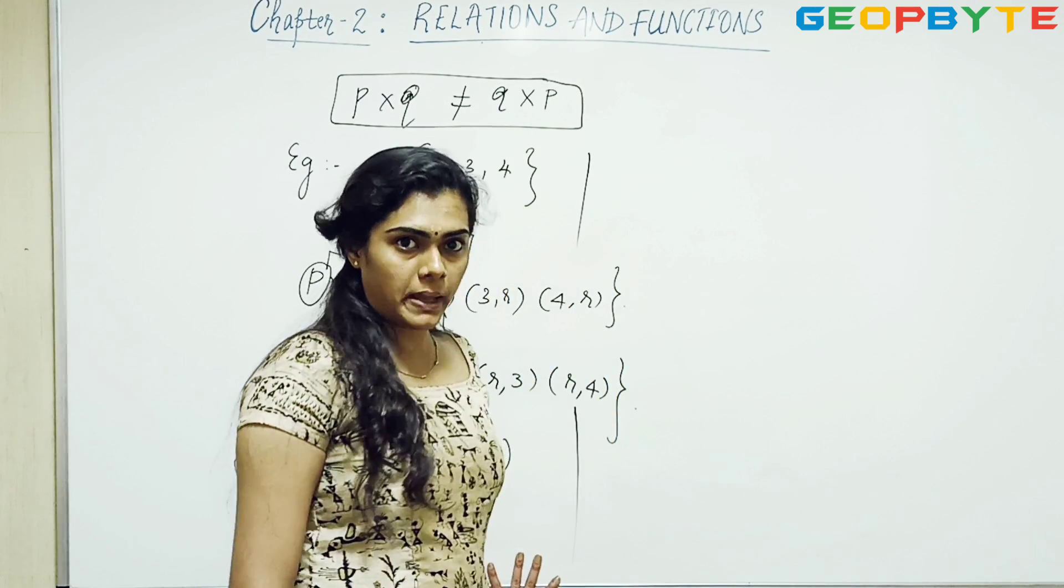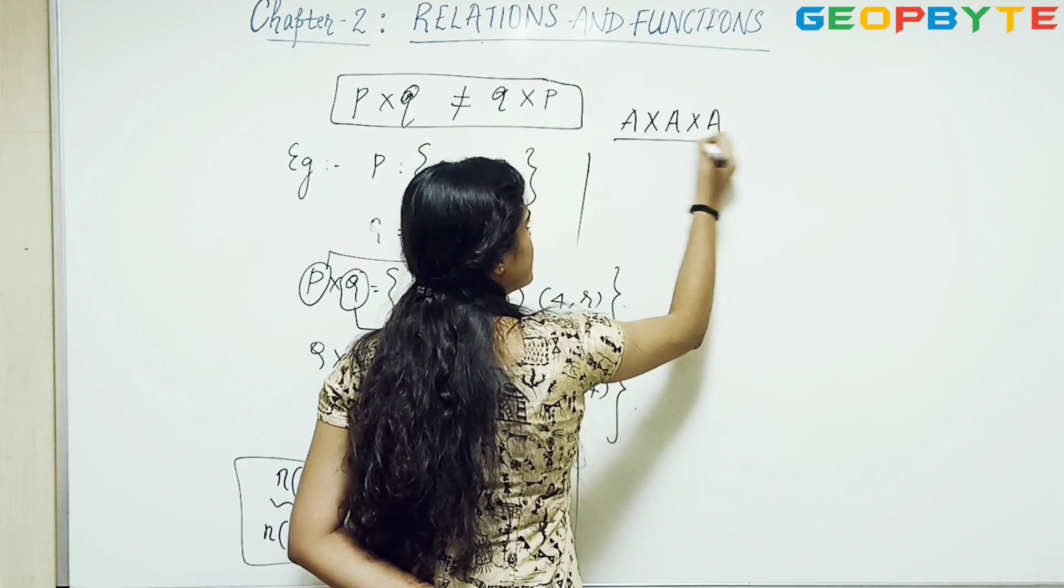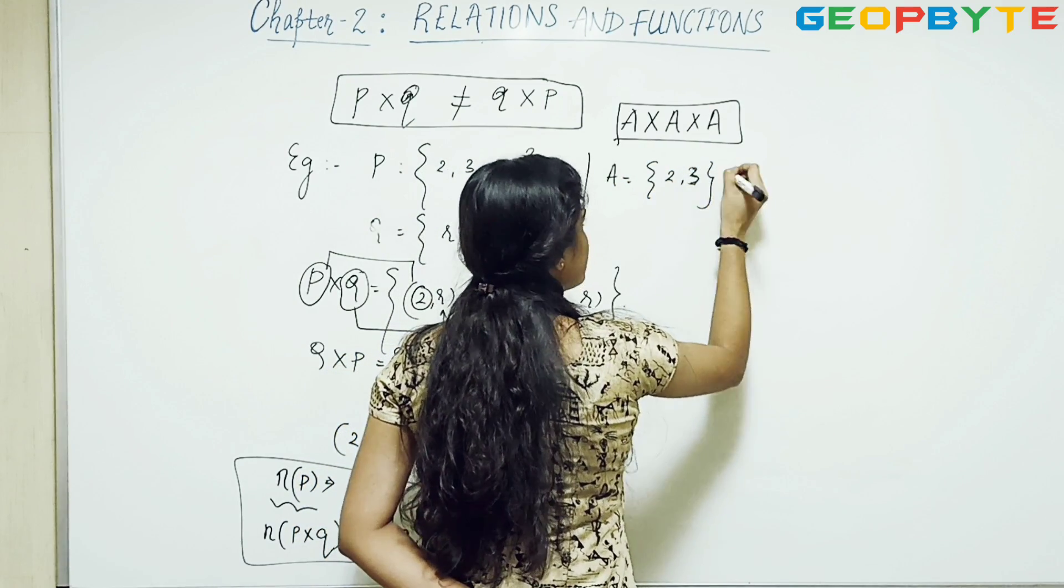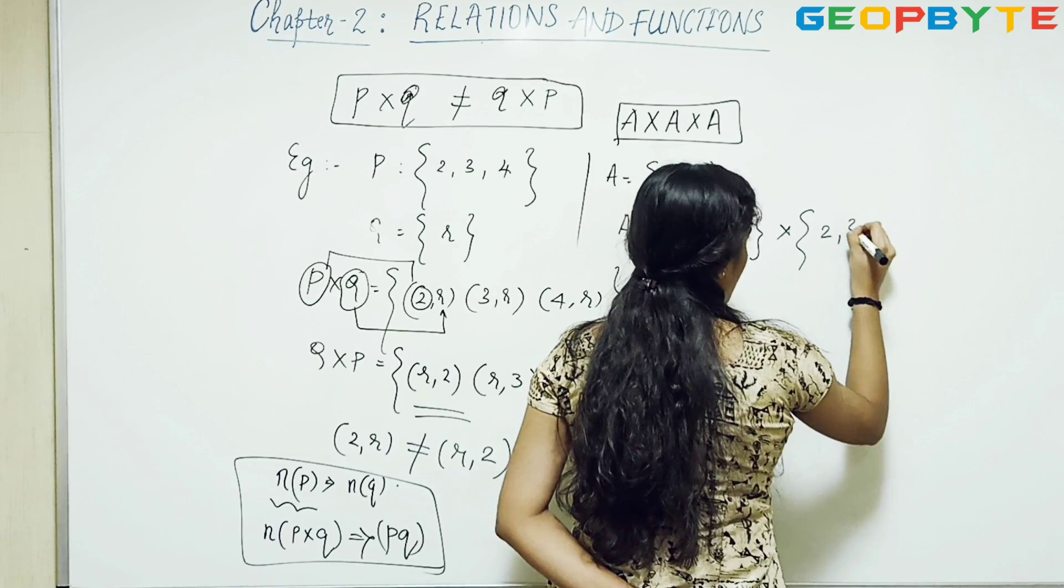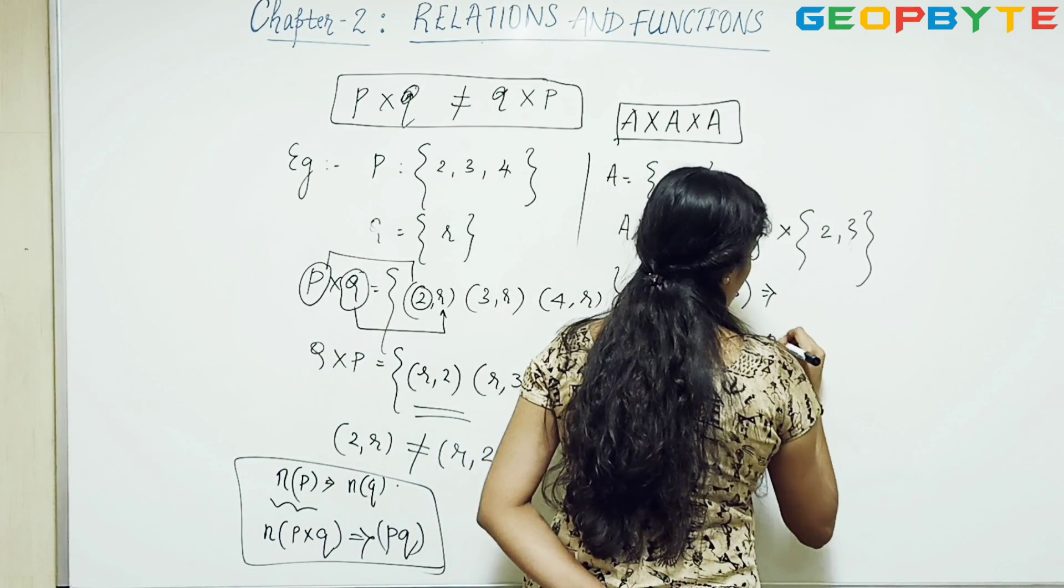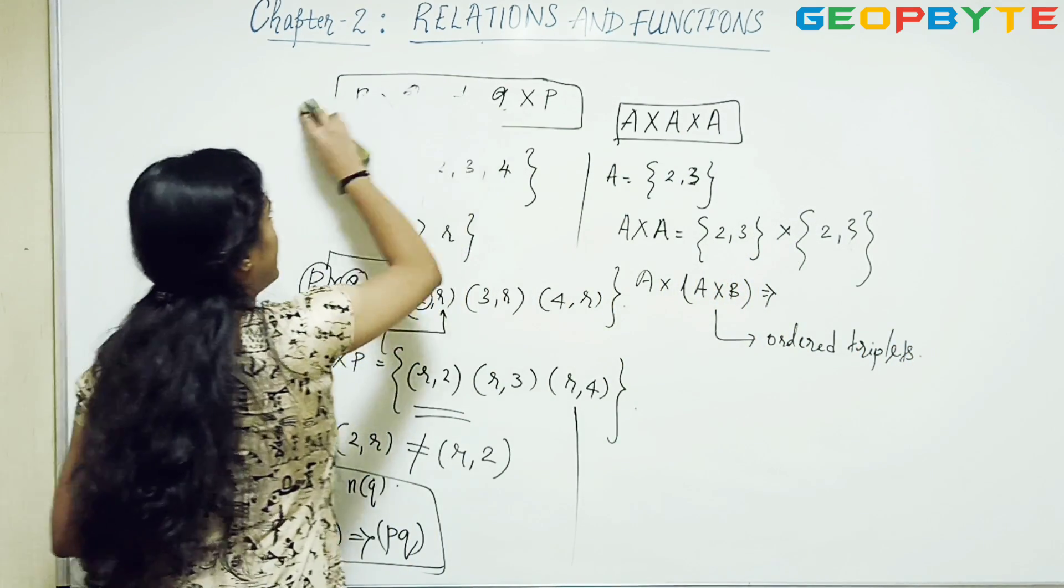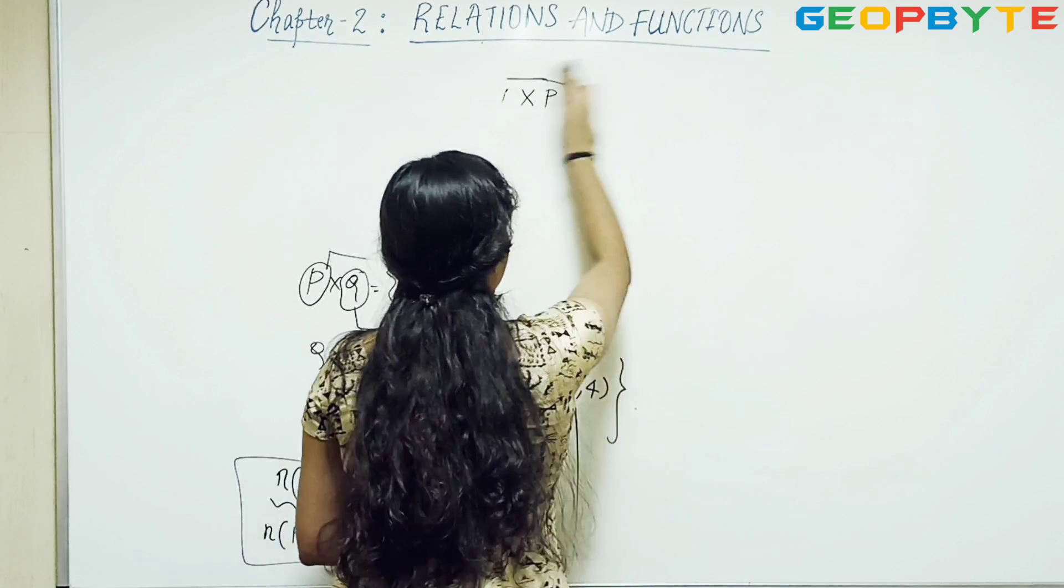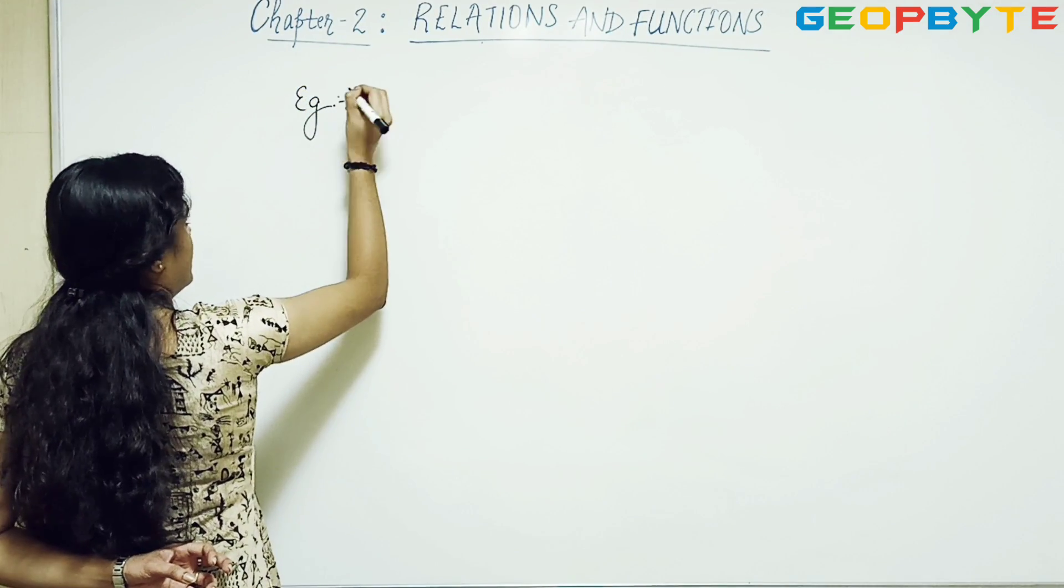Now, ordered pairs. Now what is triplets? If there are 3 identical things, then we call it as triplets. So if I have an element a equal to (2,3), then I can make a×a×P, that is (2,3) cross with itself, and a×a×P. So these are called ordered triplets. Now I'll give you another example to understand this concept both. Actually, this is the easiest chapter in mathematics - you can score maximum marks in it.